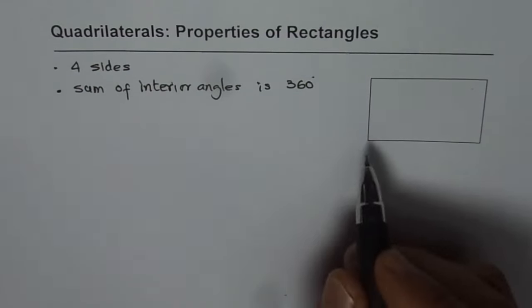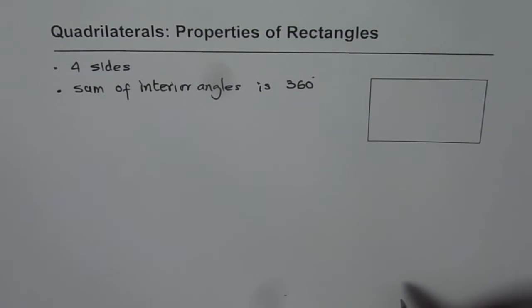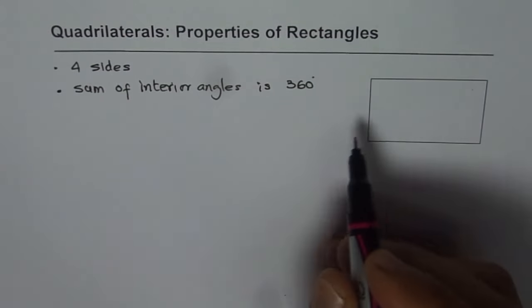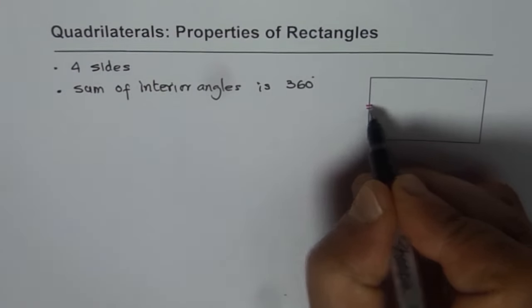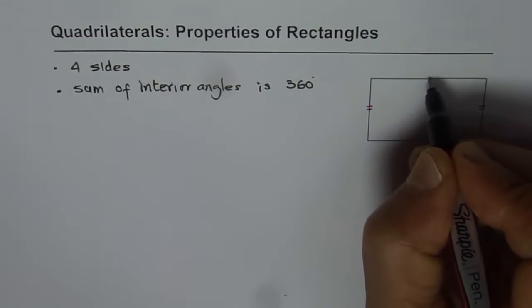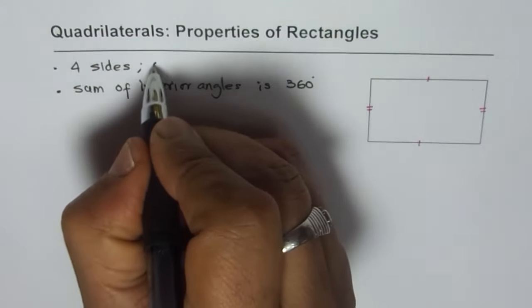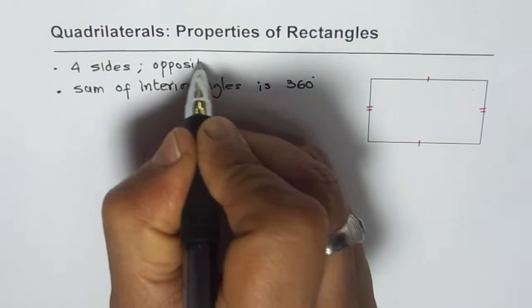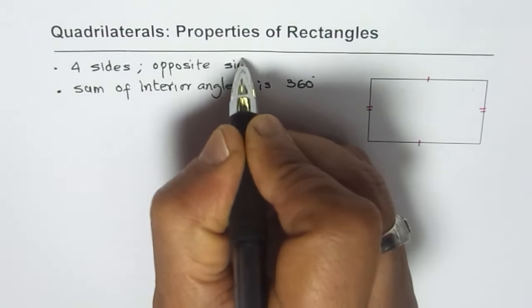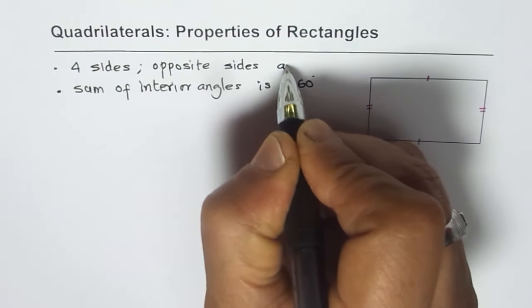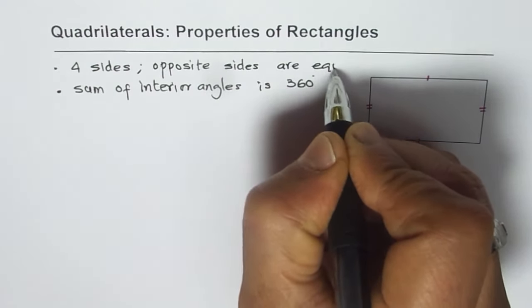Now what makes a rectangle so special? We will look into those. First thing is that it has four sides, but the opposite sides are equal. Do you see that? So it has two pairs of equal sides. We can write: four sides, opposite sides are equal.